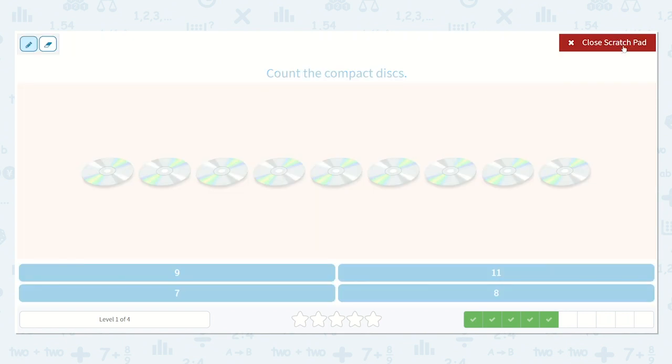I definitely want to draw lines under these. Let's see how many there are. One, two, three, four, five, six, seven, eight, nine. There are nine compact discs.